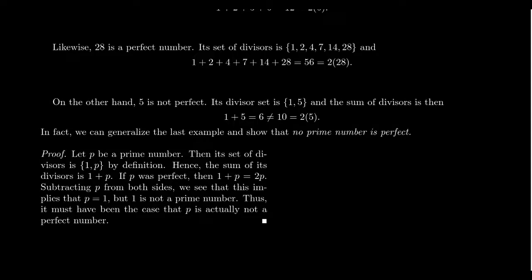Factorization of natural numbers is a computationally difficult problem — we're talking about numbers which have prime factors that are like hundreds of millions of digits long. Assuming we can find a prime factorization, then we could check whether you're perfect or not very quickly. But finding that prime factorization itself is a hard problem. So checking membership in the set of perfect numbers is a computationally hard problem for an arbitrary natural number.